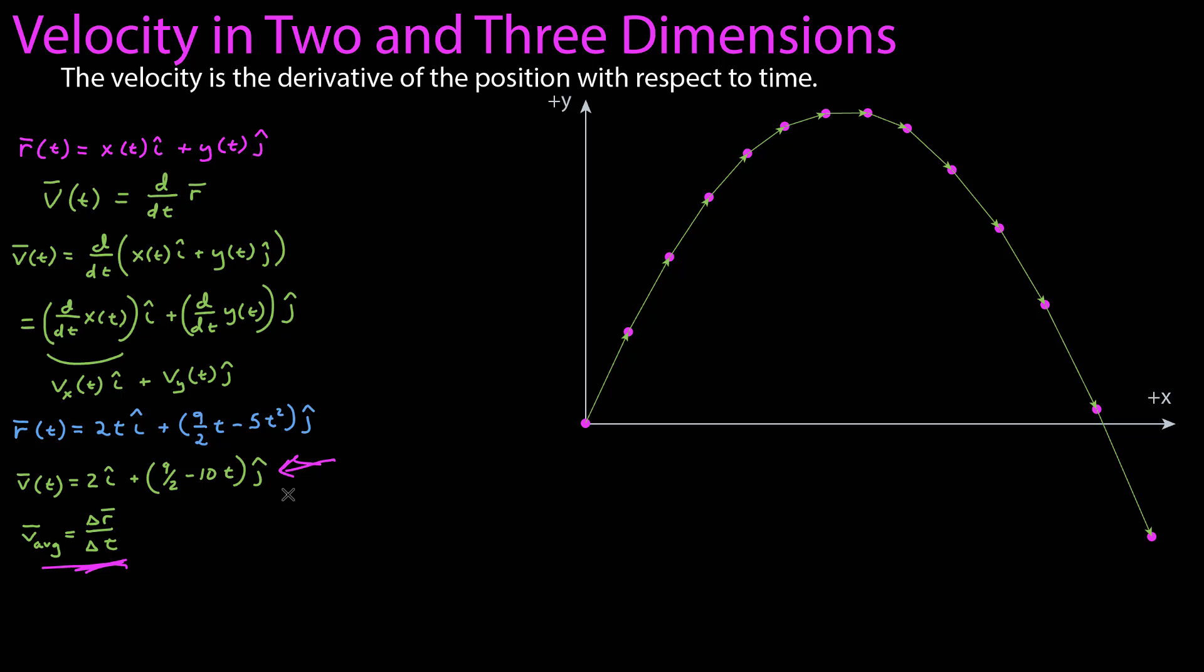This mathematical representation tells us that the x component of the velocity isn't changing. It's constant at two meters per second. Is that true? I simply copied all of those velocity vectors all on a vertical line. And so the question is, is the x component of each of these vectors the same?